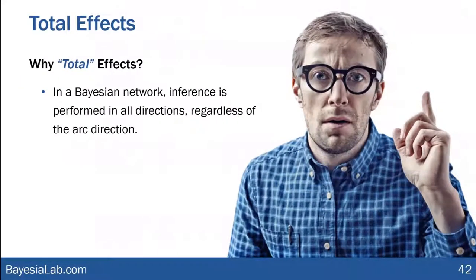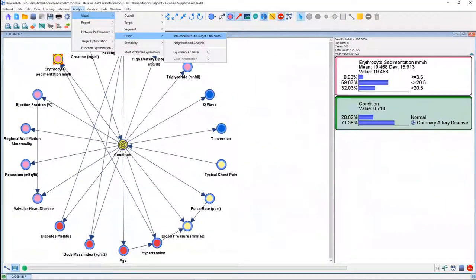You may now ask: why do we call it 'total effects' as opposed to just 'effects'? What is important to bear in mind is that in the Bayesian network, inference is always performed in all directions regardless of the arc direction. Let me illustrate this by plotting the influence path of erythrocyte sedimentation rate to condition.